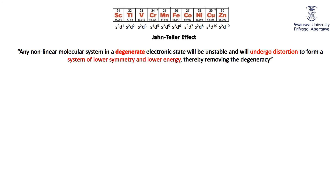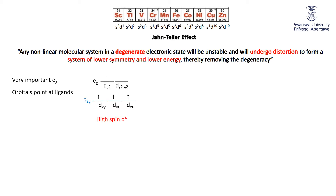Still on the Jahn-Teller effect — let's do some generalizations. The effect is really important when the degeneracy is in the eg, because the eg orbitals — the dz² and the dx²-y² — are the ones that point directly at the ligands. Being the ones pointing at the ligands, they are most affected when you alter the ligands. We've already seen high spin d4, where the fourth electron goes into the eg and can go into either the dz² or the dx²-y².